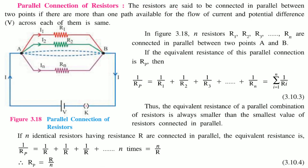In a parallel connection of resistors, the resistors are connected between two points with more than one path available for current flow. The current I divides into I1, I2... In, and the potential difference between points A and B is identical for all resistors — the potential difference remains the same. The equivalent resistance 1/Rp is given by 1/R1 + 1/R2 + ... + 1/Rn, which equals sigma from i=1 to n of 1/Ri.